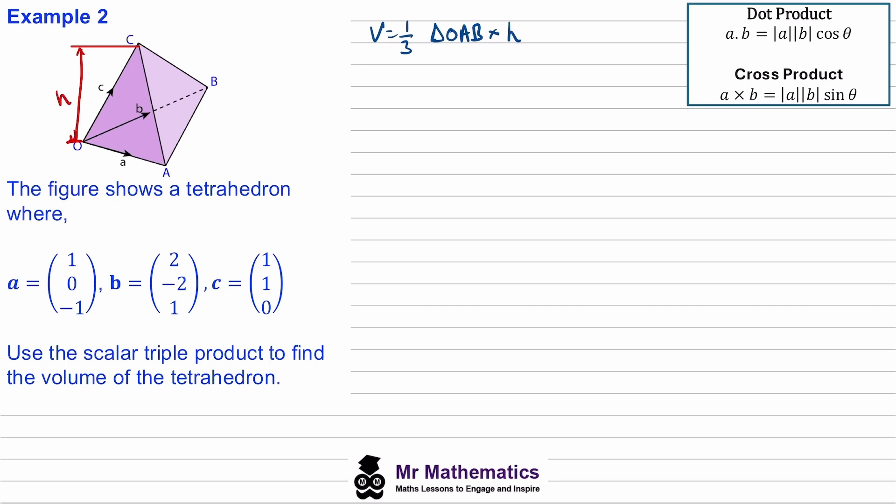And I showed you in a previous video on this playlist how we can work out the area of a triangle using the cross product. So triangle OAB will have an area of one half of the magnitude of vector A crossed with vector B. So our volume will be one third times a half, so one sixth of the magnitude of A crossed with B. And then we need to work out the perpendicular height.